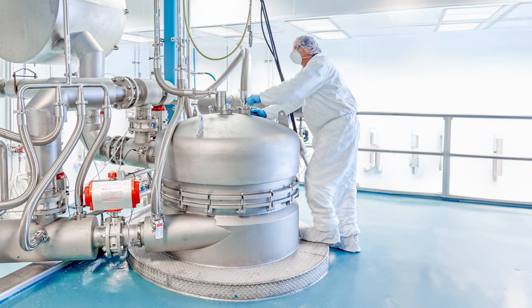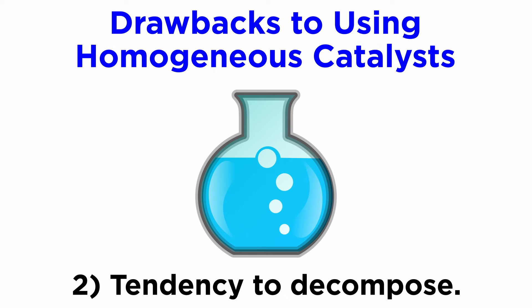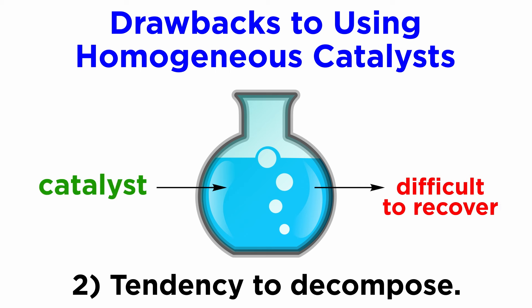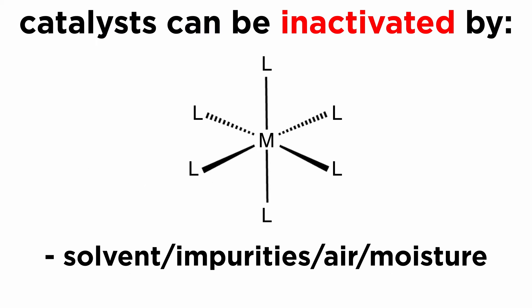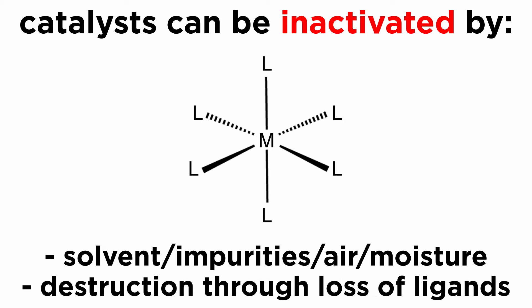Nevertheless, these catalysts are routinely used to prepare literal tons of fine chemicals and pharmaceuticals. Another problem with homogeneous catalysts is that they tend to decompose during their catalytic performance, so at the end of a reaction they can't always be fully recovered and reused. In such a case, if an expensive metal is involved, this is usually recovered from the mother liquor — meaning the solution that remains after the product has been filtered or extracted — and it can then be recycled by specialized companies. Catalysts are also limited by their delicate constitution; they may be inactivated by solvents, impurities, air, moisture, or destroyed through loss of ligands.